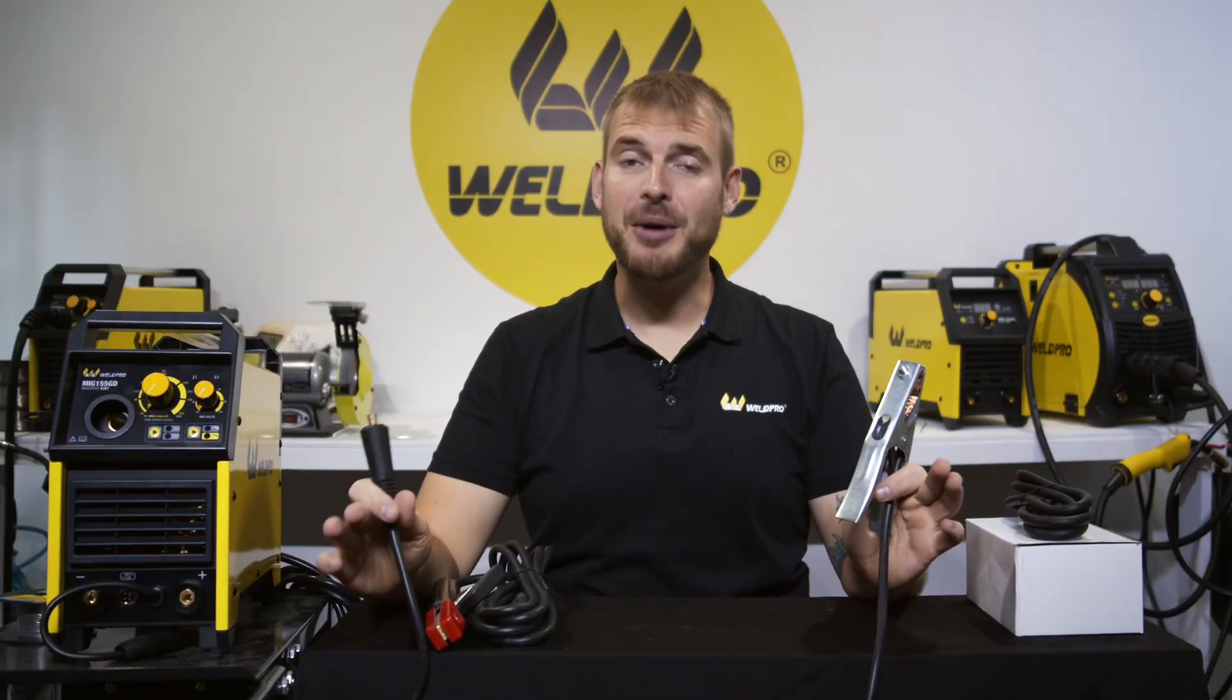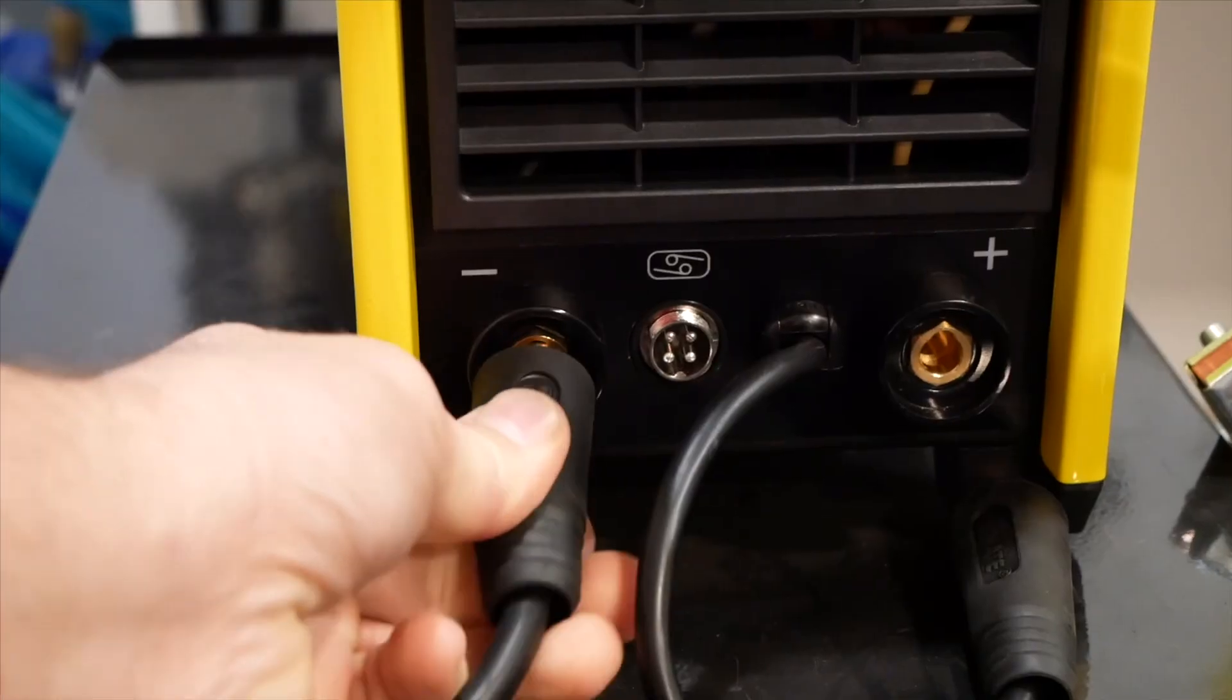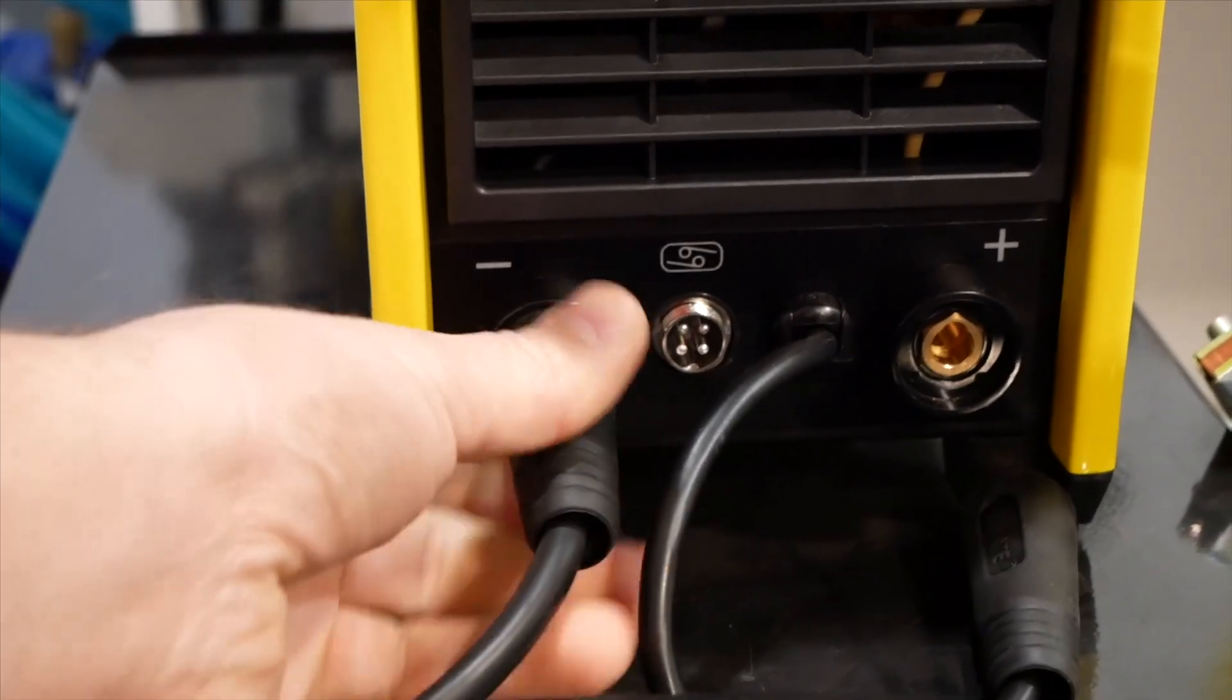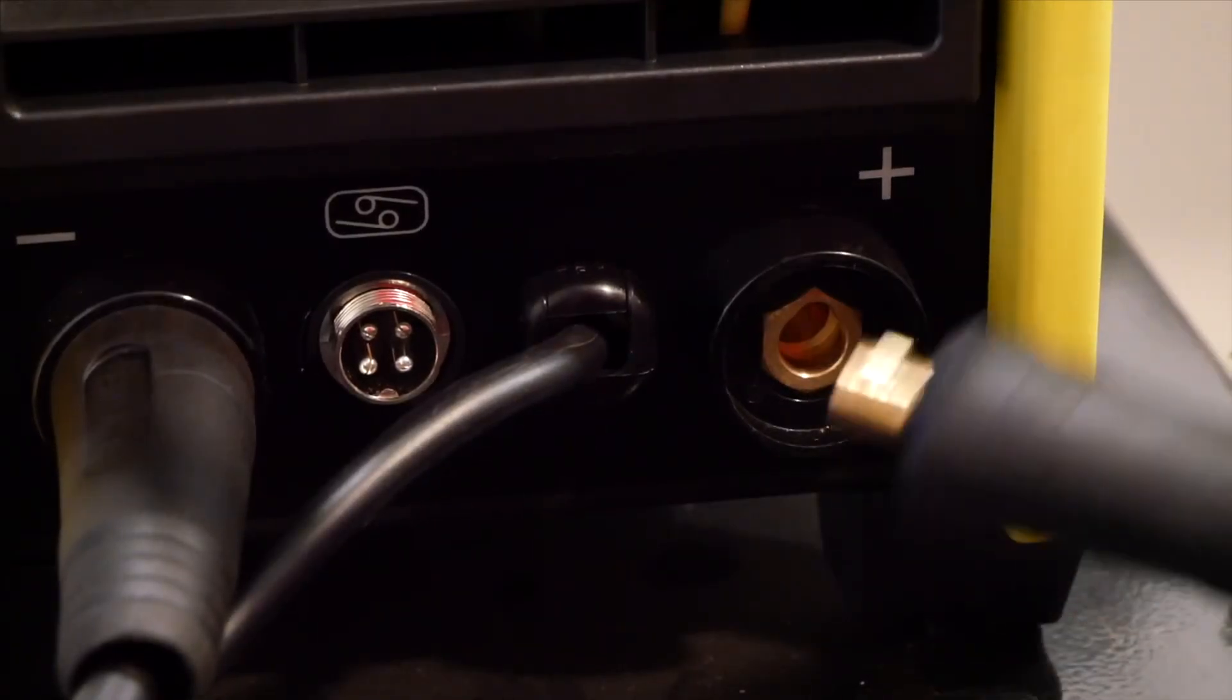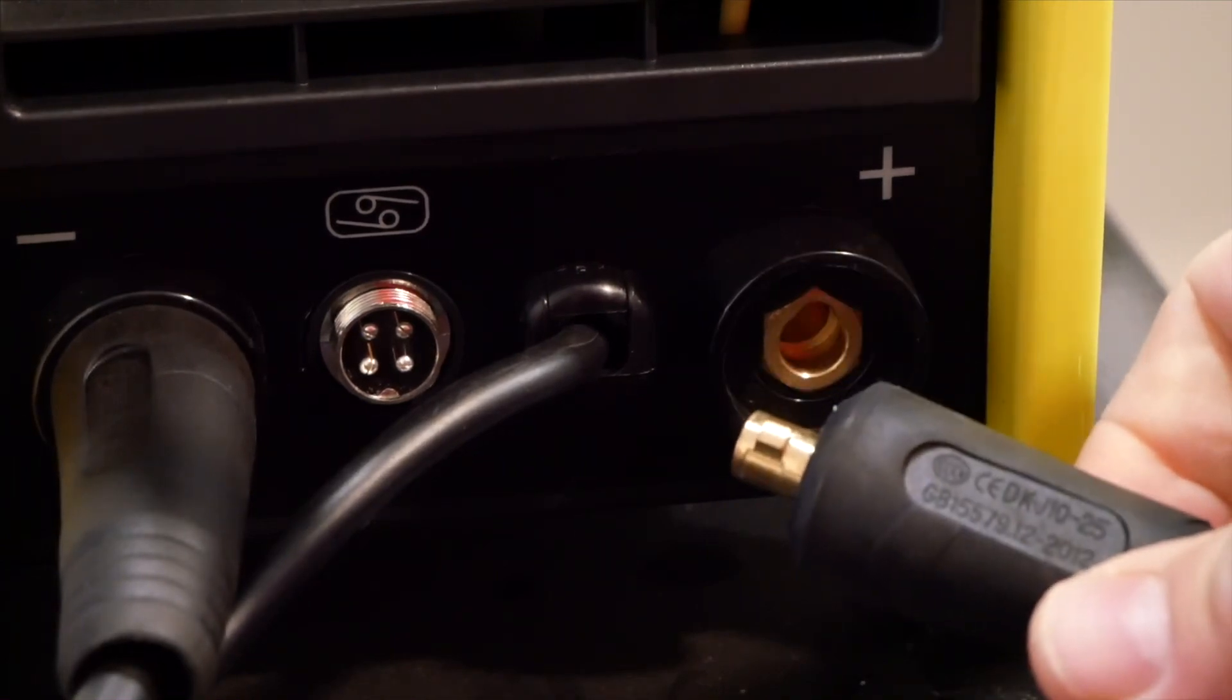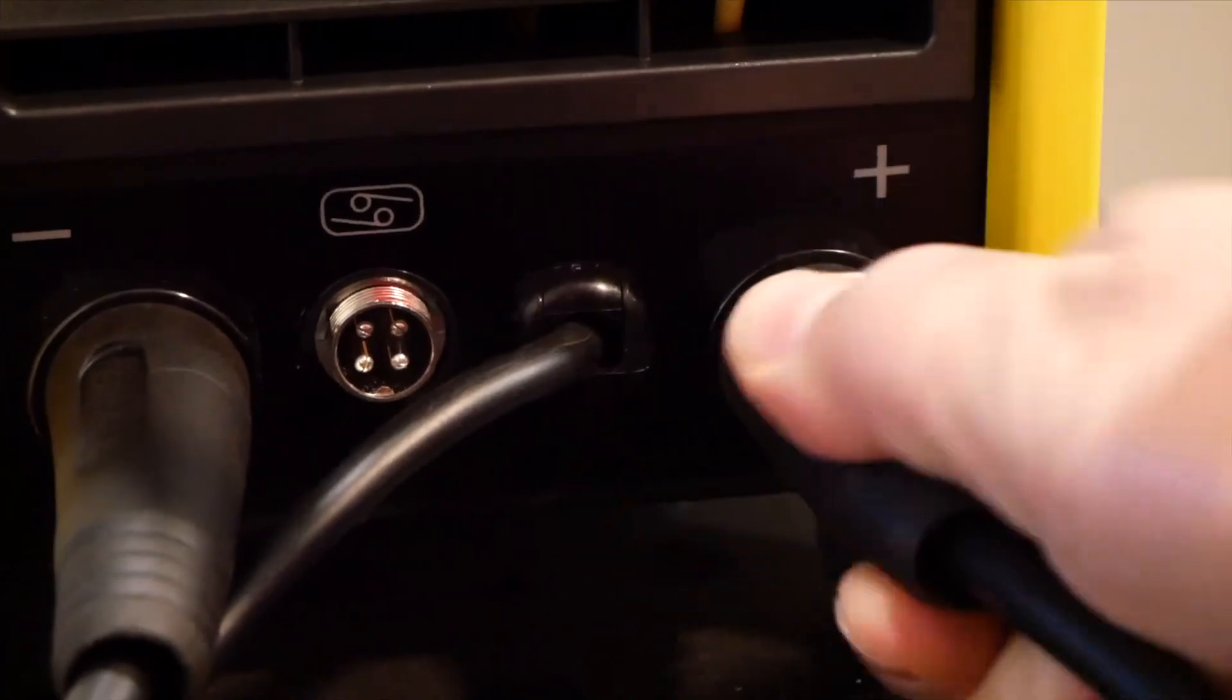With the ground clamp unraveled, I'm going to put this dense connector into the negative terminal on the front of the MIG-155. Once your ground clamp is connected, go ahead and do the same thing for the electrode holder. Insert the dense connector for the electrode holder into the positive lug on the front of the machine and rotate 90 degrees clockwise to ensure the connector is secured tightly.